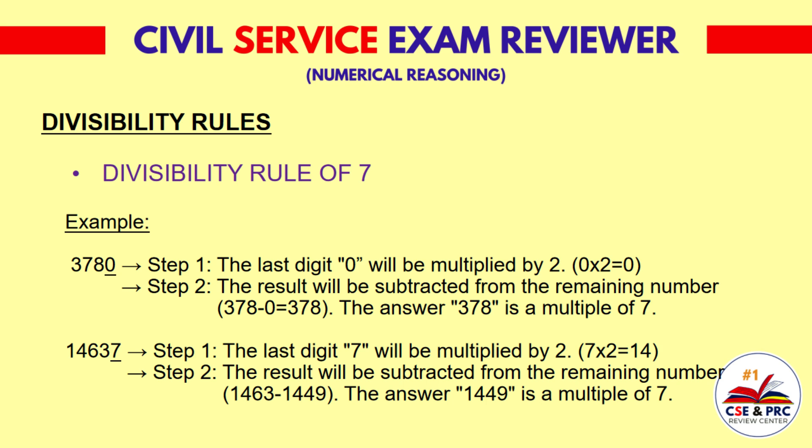Another example, 3,780. Step 1: The last digit 0 multiplied by 2 equals 0. Step 2: 378 minus 0 equals 378. The answer 378 is a multiple of 7. Another example, 14,637. Step 1: The last digit 7 multiplied by 2 equals 14. Step 2: The result subtracted from the remaining number 1,463 gives 1,449. The answer 1,449 is a multiple of 7.